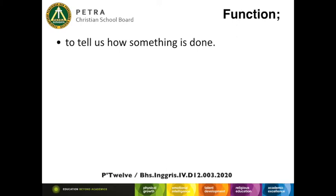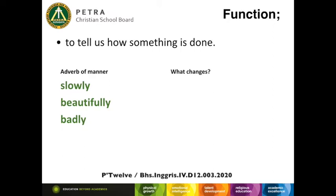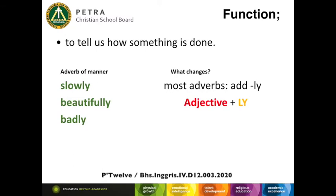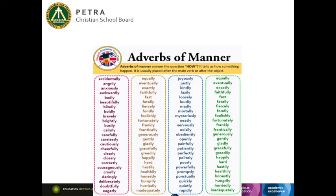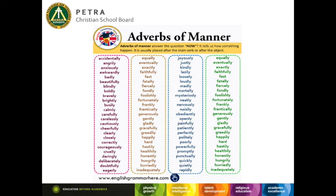I'll provide you some examples of adverb of manner. They are: slowly, beautifully, and badly. Slow, beautiful, and bad are adjective words. To change them into an adverb, you just need to add '-ly' after the adjective. So to make an adverb, add '-ly' after the adjective. I also provide you a list of adverbs of manner — I hope you can learn it at home.